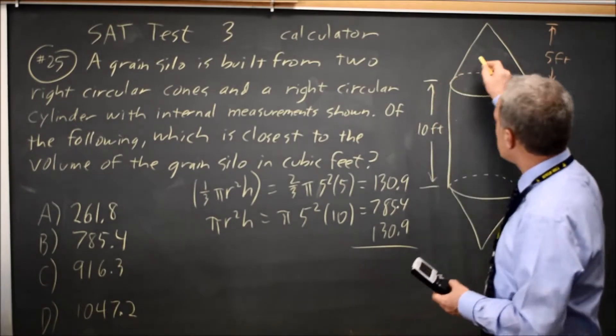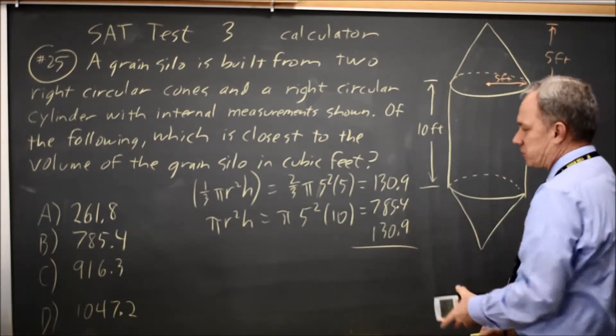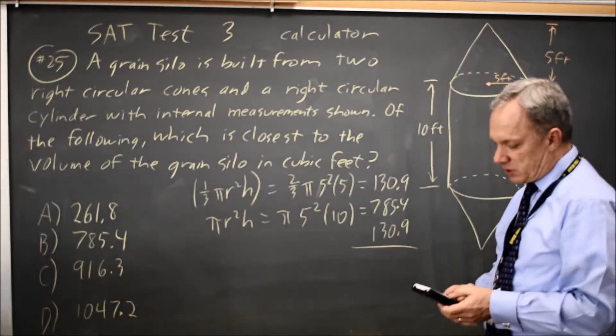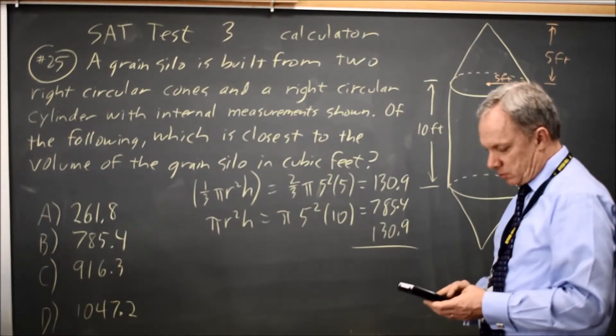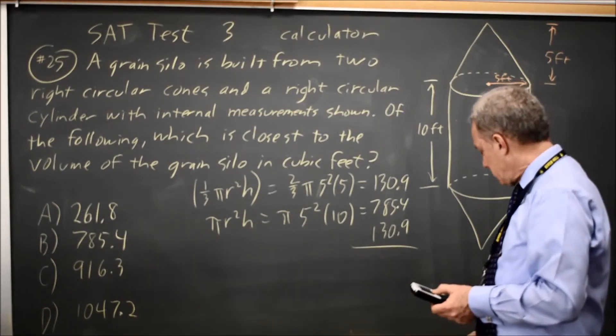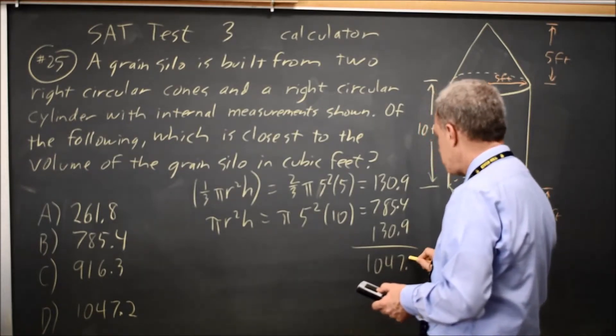The second cone—so the top cone is 130, the middle cylinder is 785, and the bottom cone is 130. If I add those together, I get 1047.2.